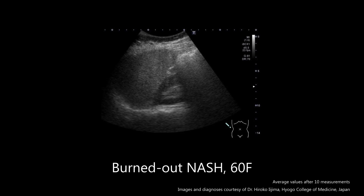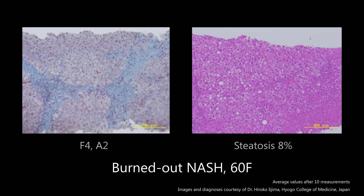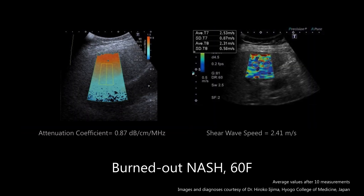When NASH progresses to liver cirrhosis, the extent of steatosis will decrease, as shown in this example from a 60-year-old female with burned-out NASH. Histopathological examination following liver biopsy demonstrated F4 cirrhosis, A2 grade inflammation, and 8% fat content. In order to fully investigate burned-out NASH, both liver stiffness and steatosis need to be examined. A more comprehensive liver disease assessment can be performed using the quantitative results from both shear wave elastography and attenuation imaging.